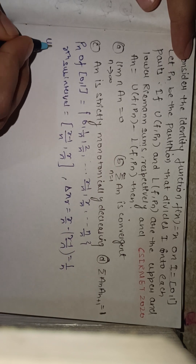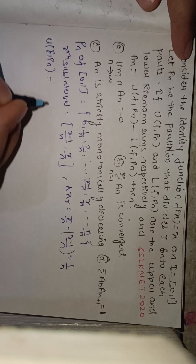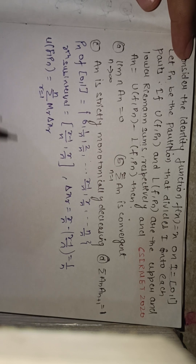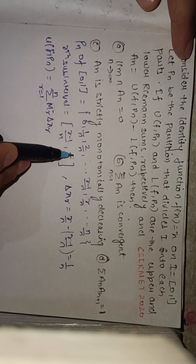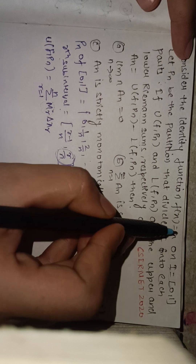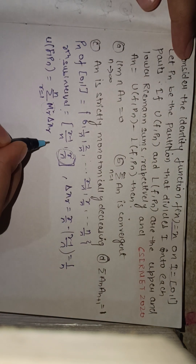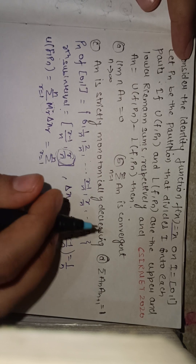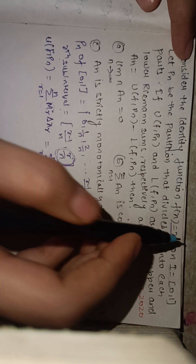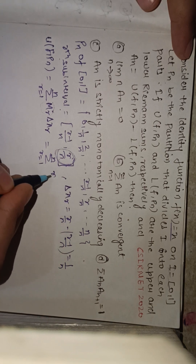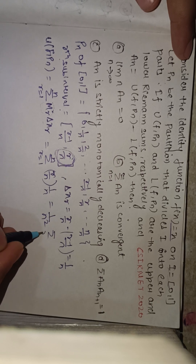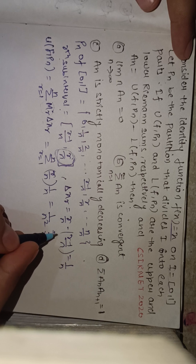For finding the upper Riemann sum U(f,Pn), we compute the summation from r = 1 to n of Mr · Δxr. Here Mr is the supremum of f on the r-th sub-interval. Since f(x) = x is increasing, Mr = r/n (the upper limit). So the upper Riemann sum becomes the summation from r = 1 to n of (r/n)(1/n) = (1/n²) · summation of r.